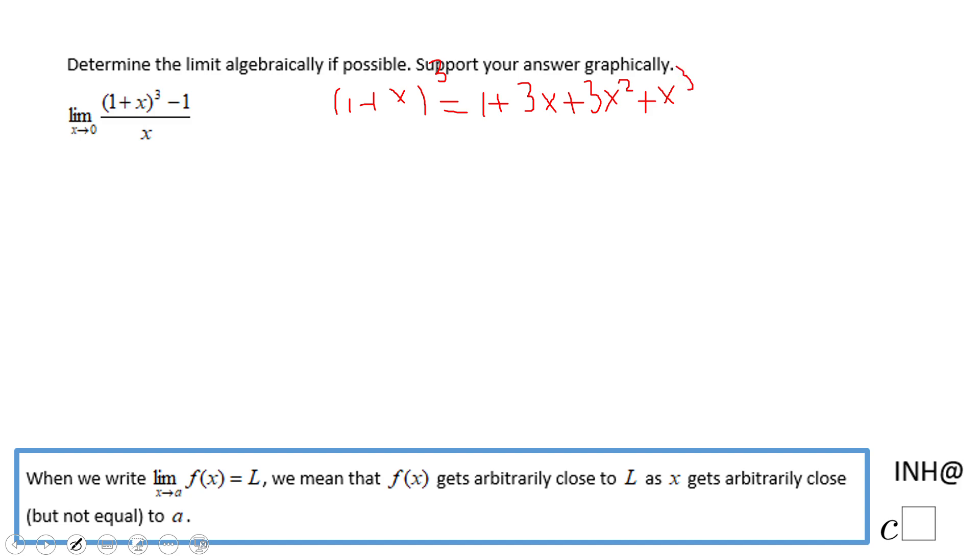That's the expression we're going to use to replace (1+x)³ in the original problem. So we're going to have 1 + 3x + 3x² + x³, don't forget about this minus one which was part of the problem, over x. And now we should notice that this one and this one cancel out.